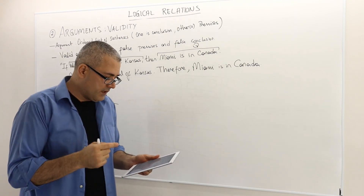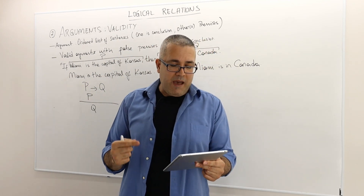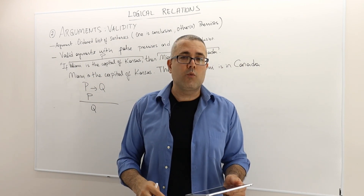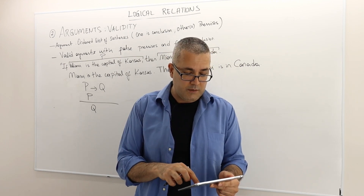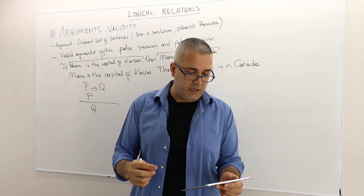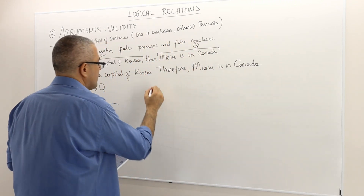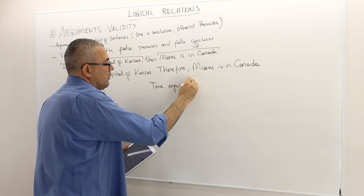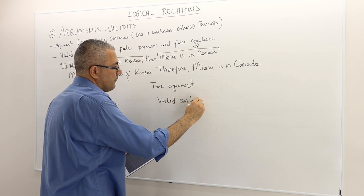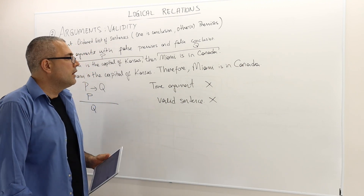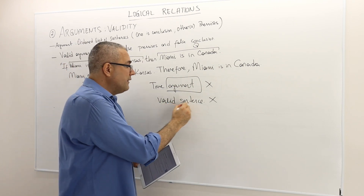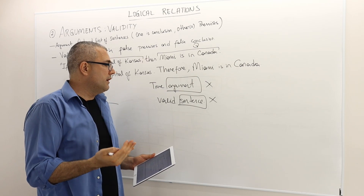Why do I give this example? Because validity is about the relationship between the sentences in an argument. Validity has nothing to do with whether the sentences are true or false. So when we discuss logical languages, it's nonsense to say a 'true argument,' and it's nonsense to say a 'valid sentence.' Arguments don't have to be true — they have to be valid. A sentence can't be valid; it is either true or false.